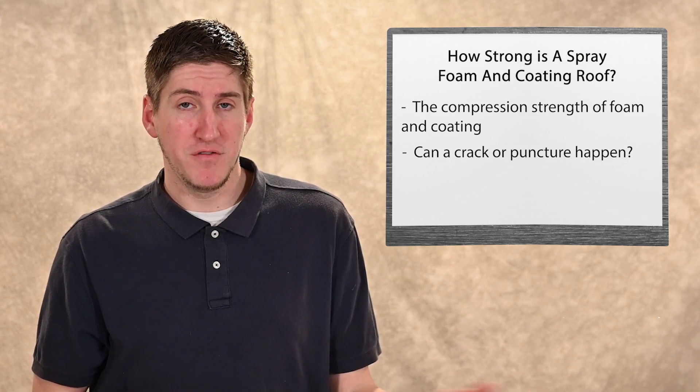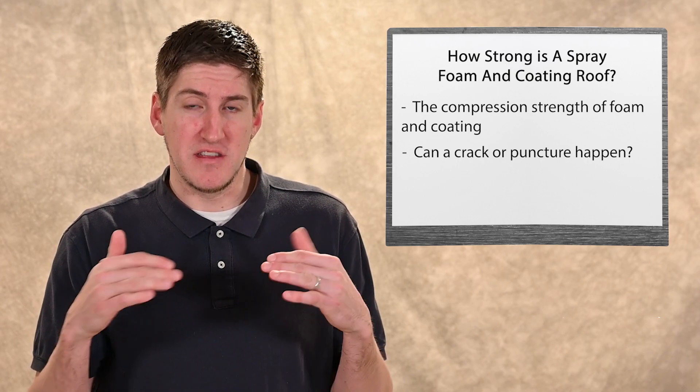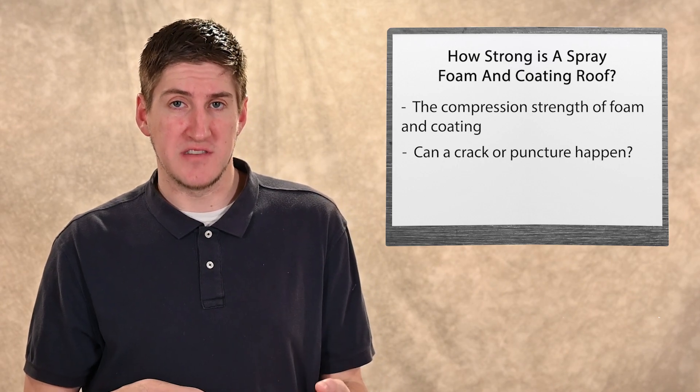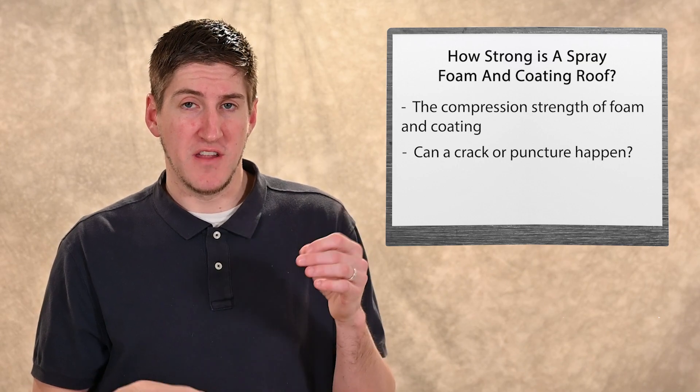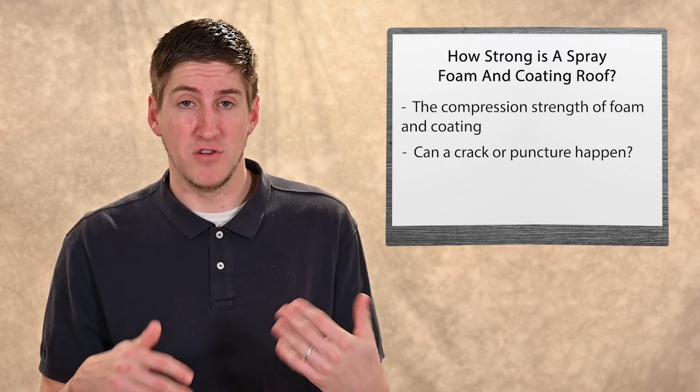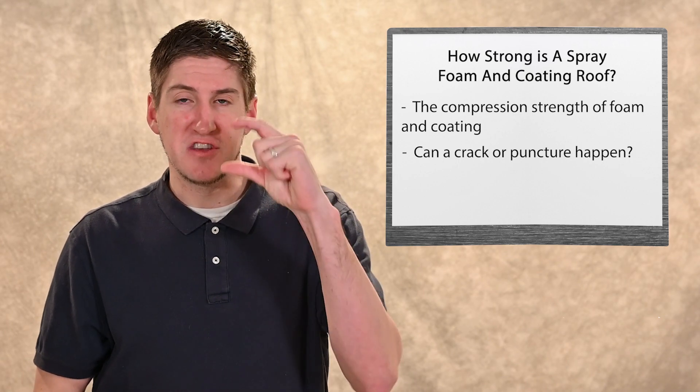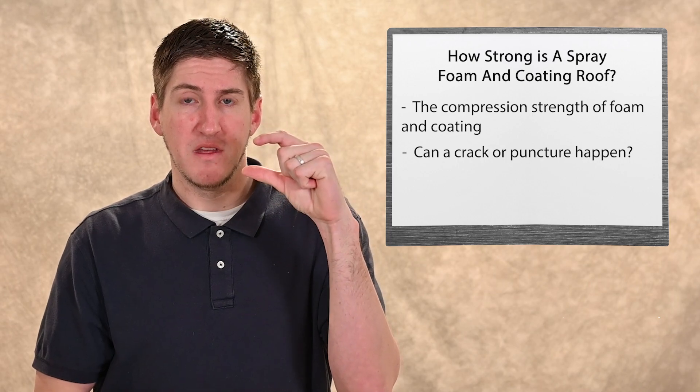Now, if that happens on a single-ply roof, and it has a little crack in it, the water will get in there and get into that polyiso board, which has open cell properties. The water will travel all the way and just keep going until it hits your roof deck and probably into your building. A huge difference because a foam roof has an inch and a half of closed cell properties.